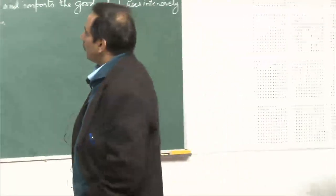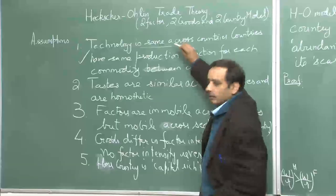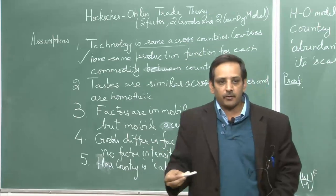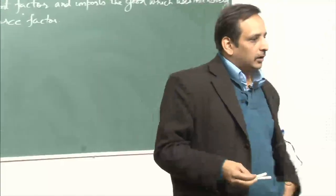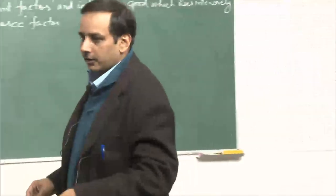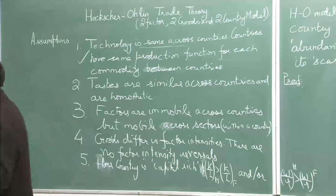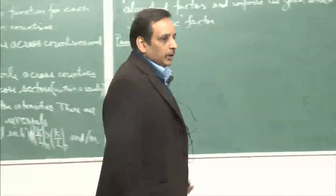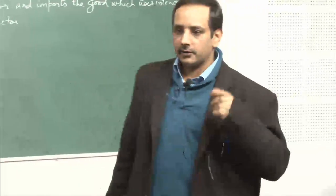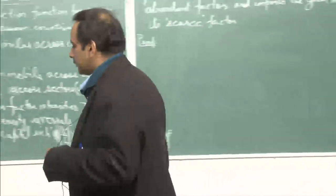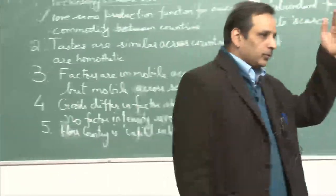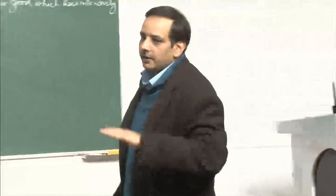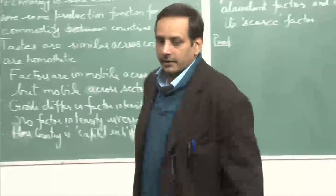People also start questioning that if you relax this assumption, then it is no longer Heckscher-Ohlin — it is like the Ricardian type of trade. So people are now refocusing attention on Ricardian theory, because Ricardian theory is the one which says trade takes place because of differences in technology. But Heckscher-Ohlin is intellectually quite rich. If you see the assumptions and the proof, the proof will be very neat and you will get the desired results.